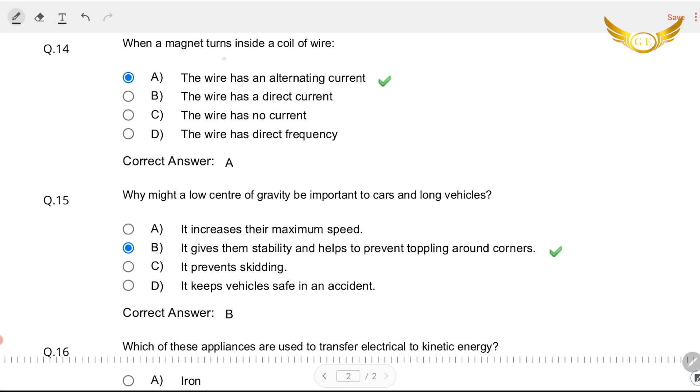Now let's come to the next question. When magnet turns inside a coil of wire, the wire has alternating current. Yes it is alternating current and that's the right answer.